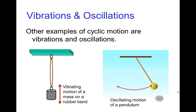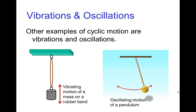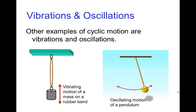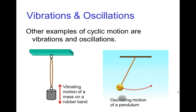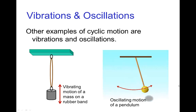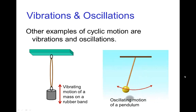Other examples include vibrations — a mass on a rubber band vibrating up and down — and something swinging back and forth like a pendulum. So vibrations and oscillations are other examples of cyclic, periodic motion.